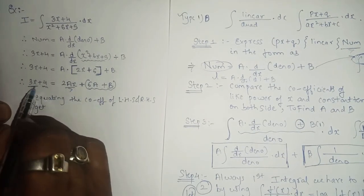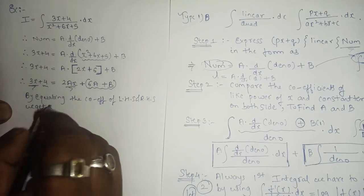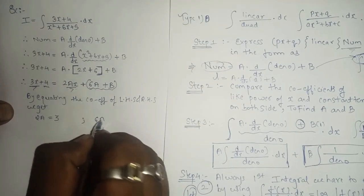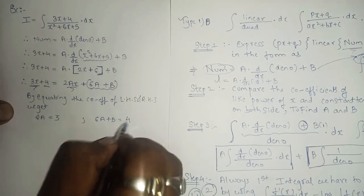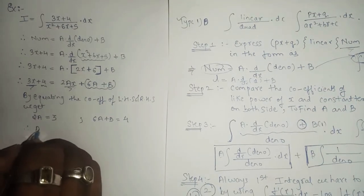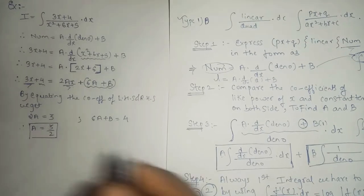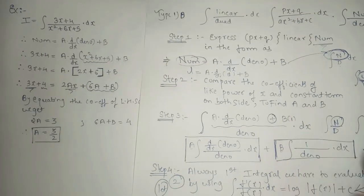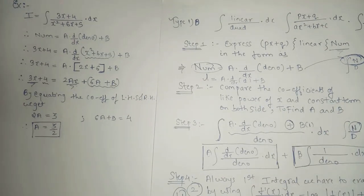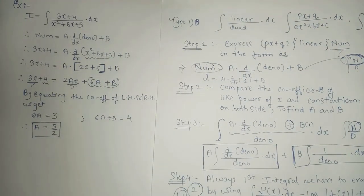The coefficient of x on the right is 2A and on the left is 3, so 2A equals 3, giving A equals 3 over 2. For the constant term: 6A plus B equals 4. We directly got A equals 3 by 2. By comparing coefficients of left and right-hand sides, we find A and B.